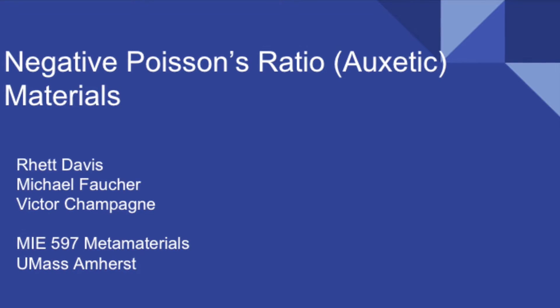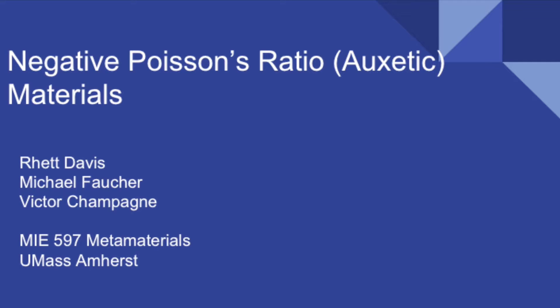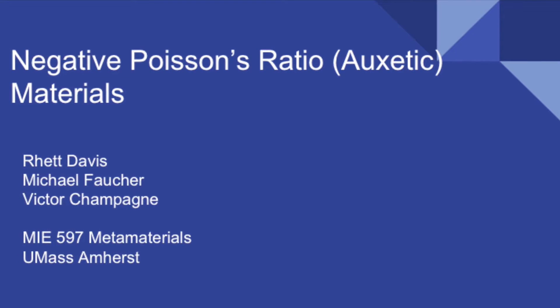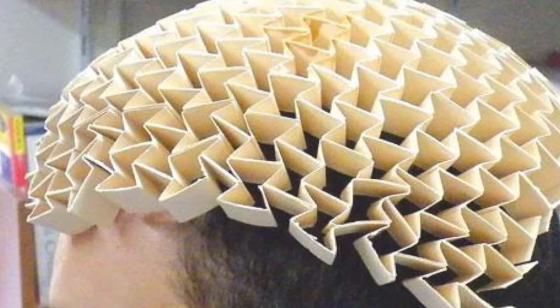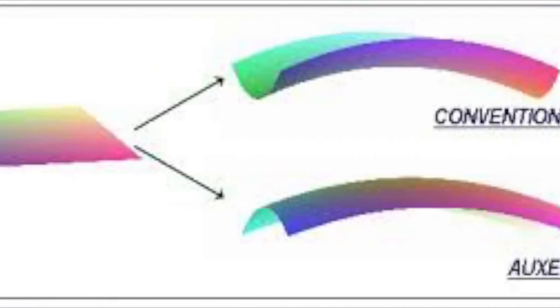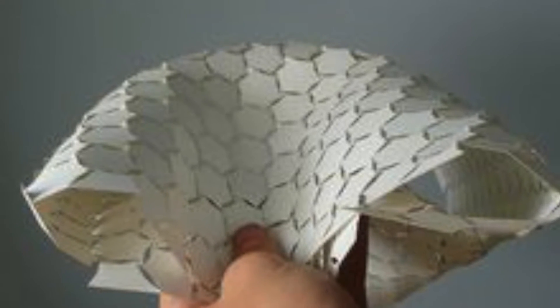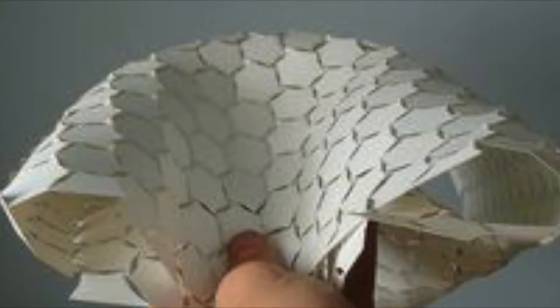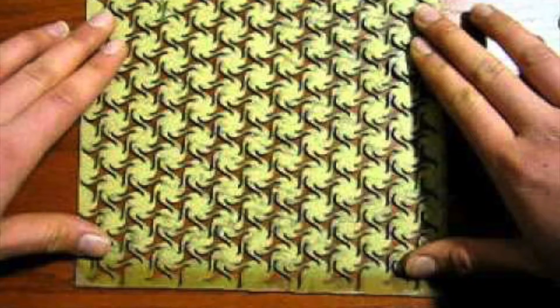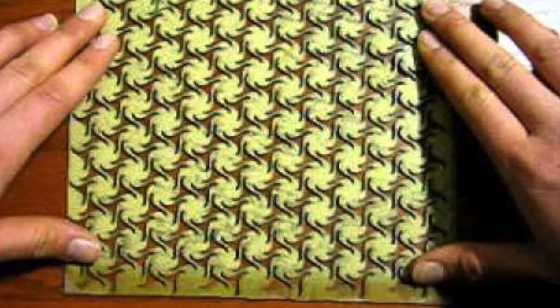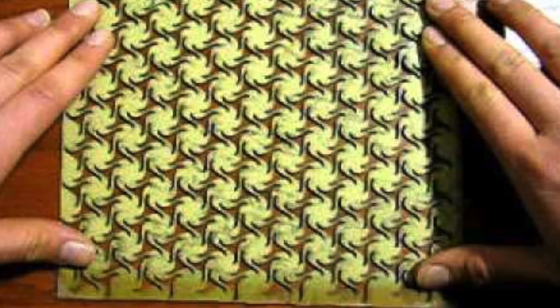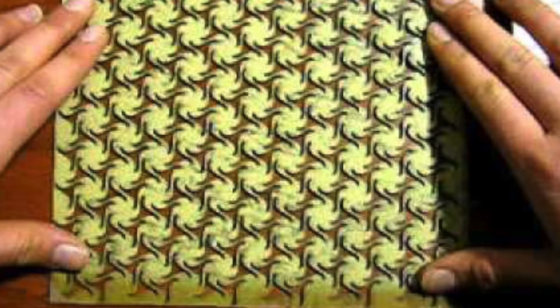Negative Poisson's Ratio — Auxetic Materials. We have all heard of Poisson's Ratio before in our classes and have used it in various equations through our academics. Each time we have done this, Poisson's Ratio has been a positive number provided by a professor, book, or game sheet. Is there such thing as a negative or zero Poisson's Ratio, and how would that work?